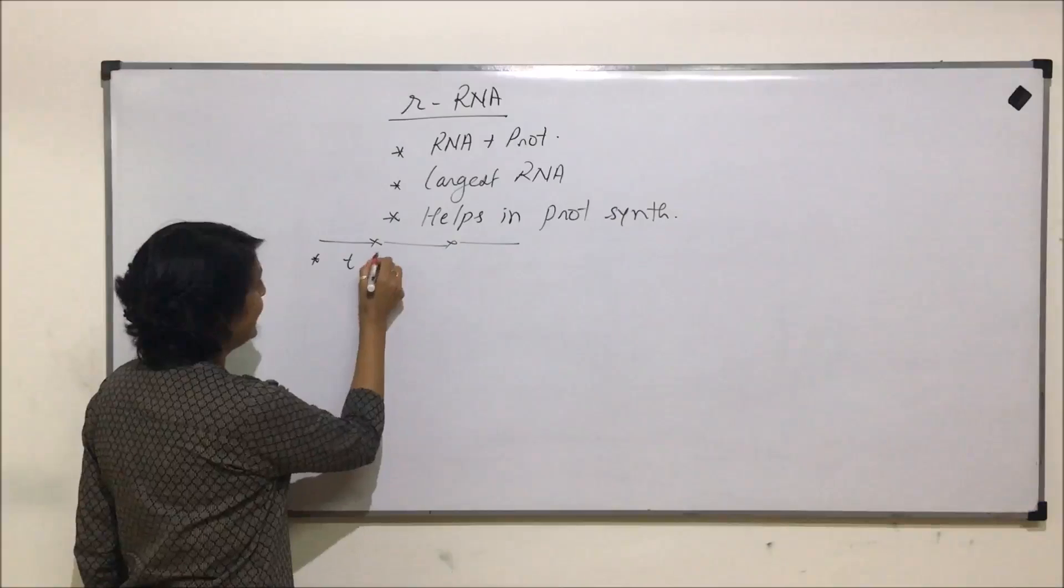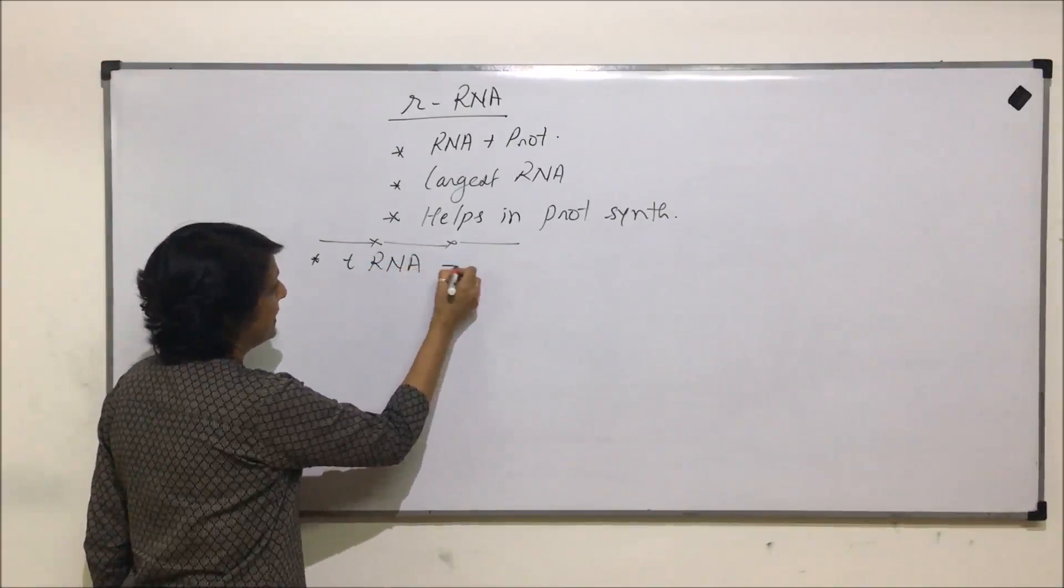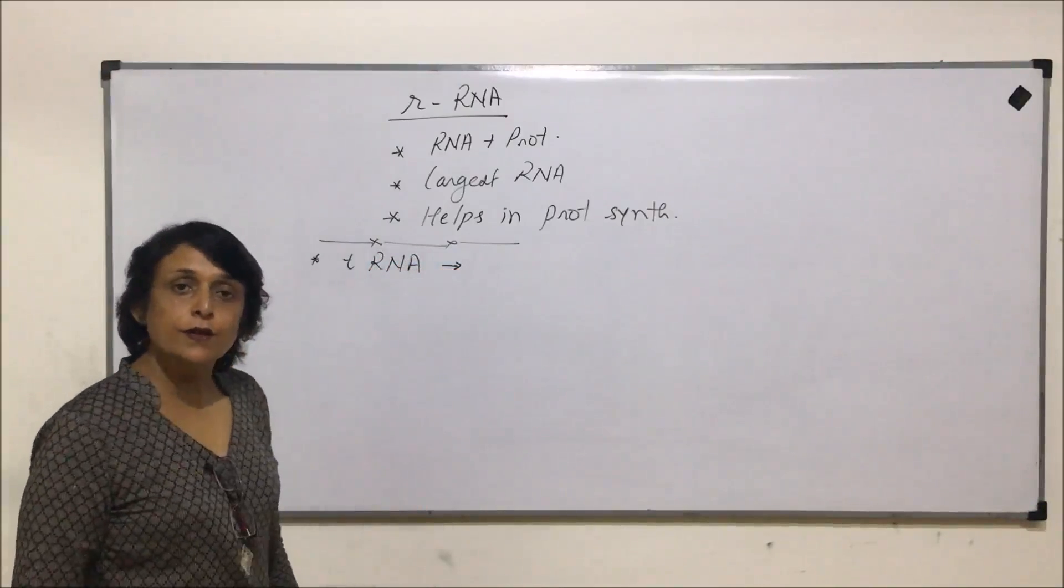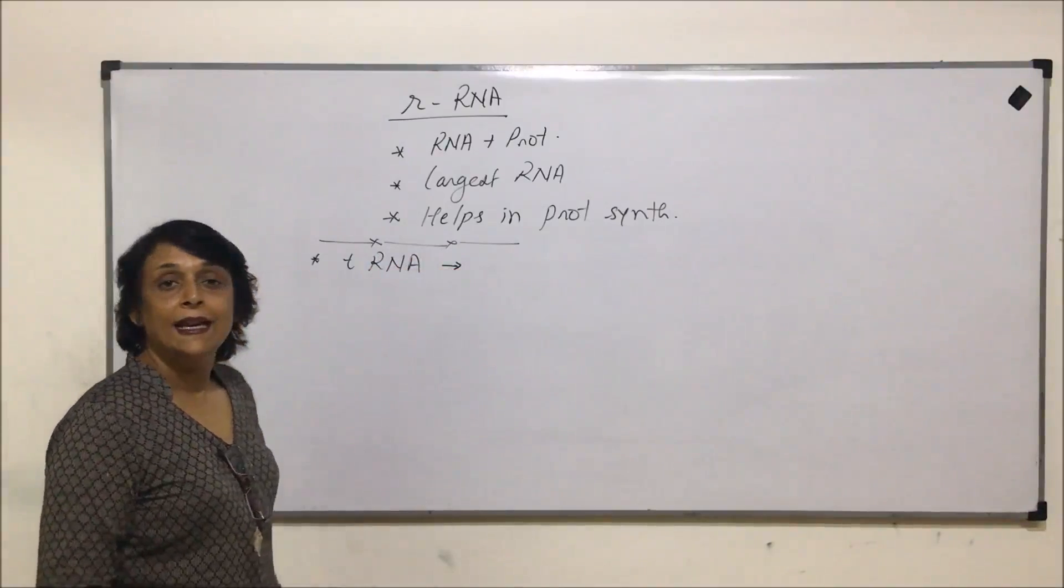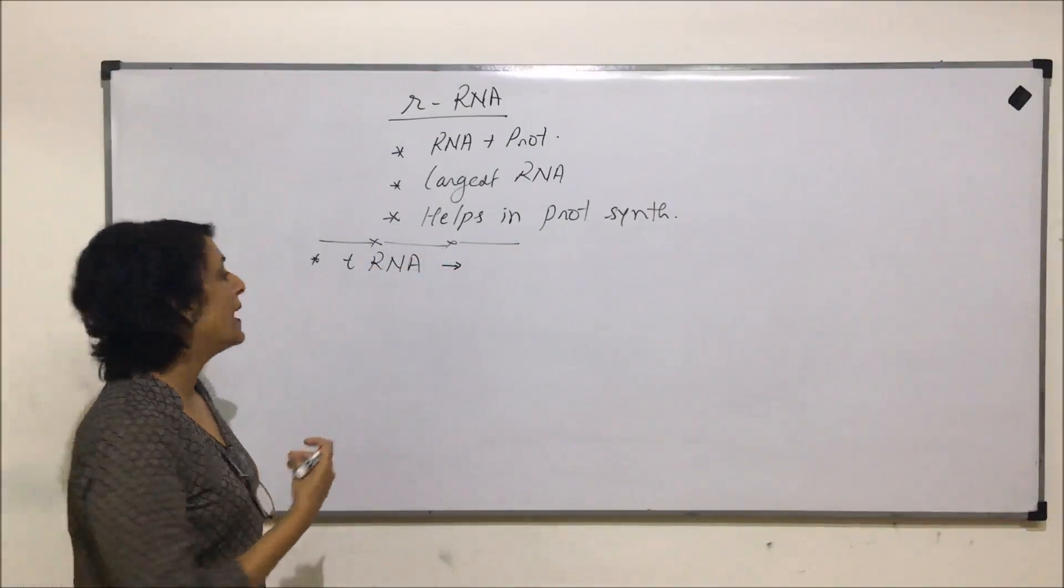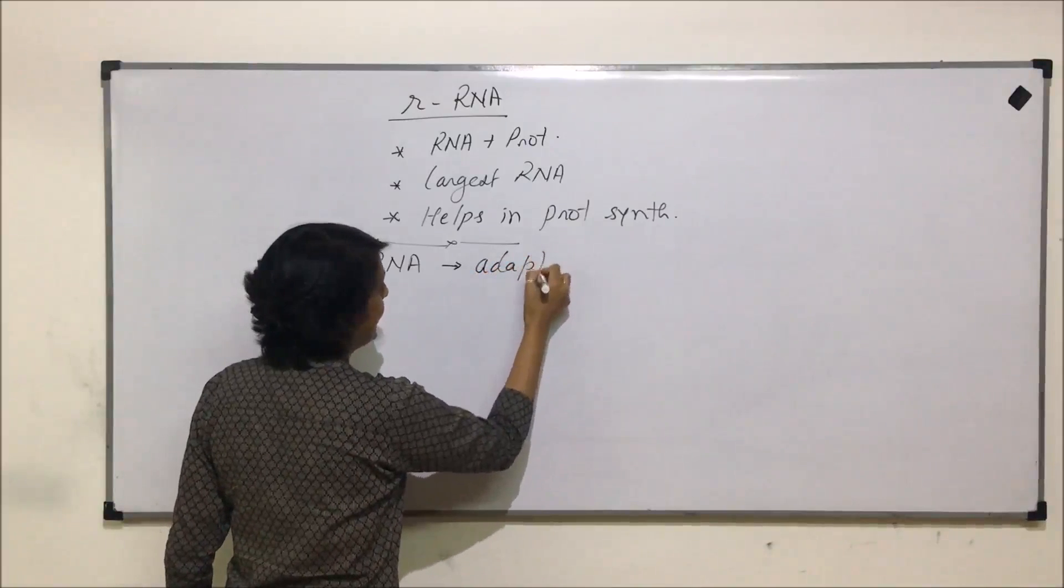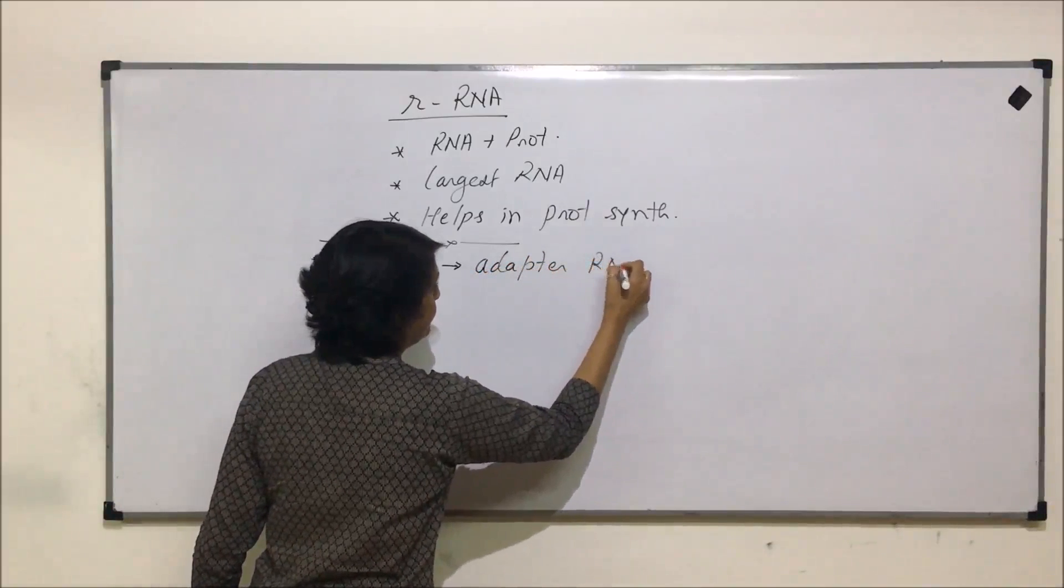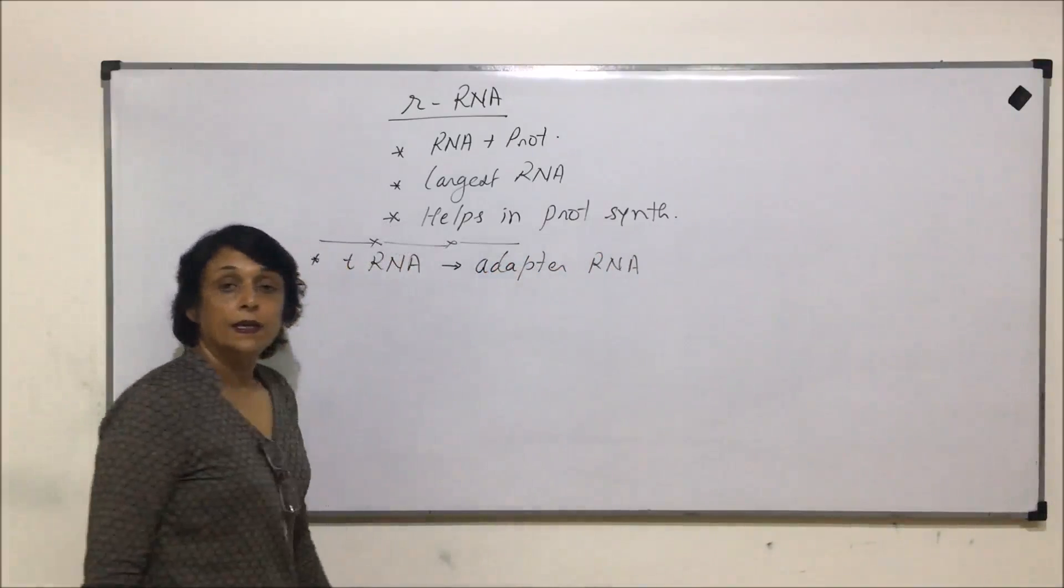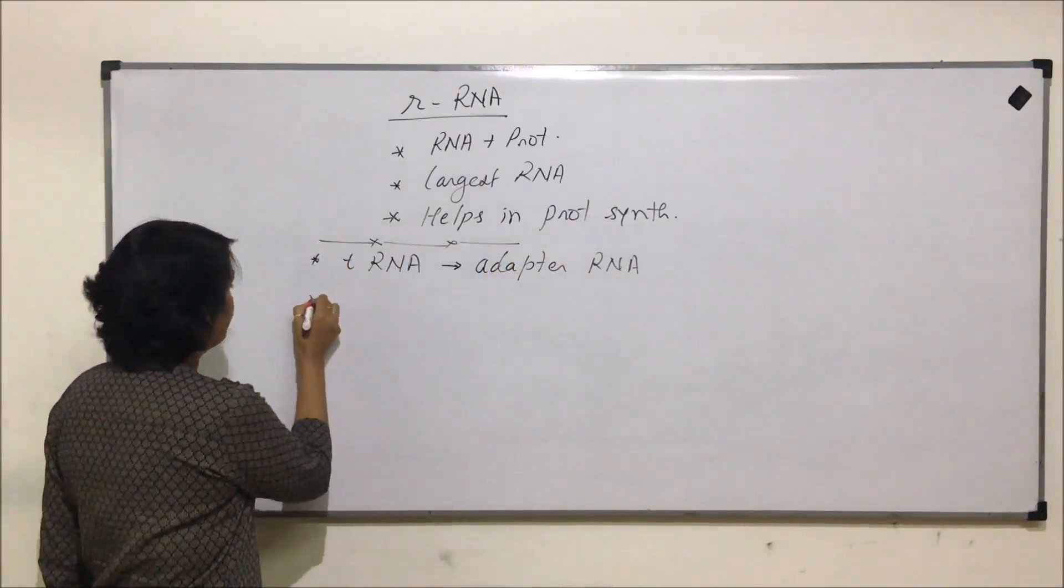All these are important in terms of competitive exams because many times they ask such questions. tRNA is the smallest, we have already talked about it, and it is also known as soluble RNA. This one is also known as adapter RNA.